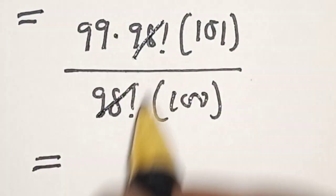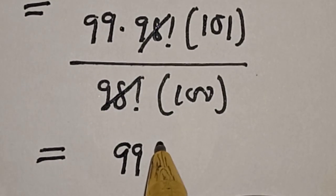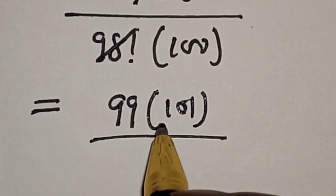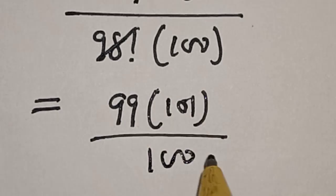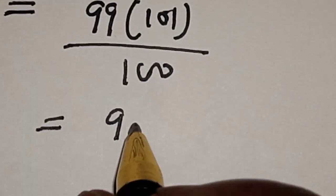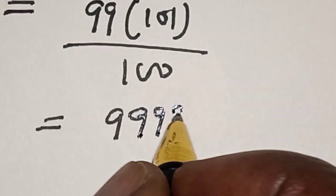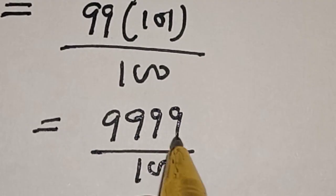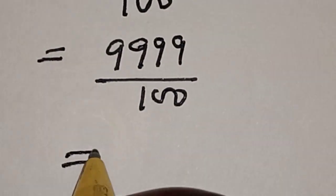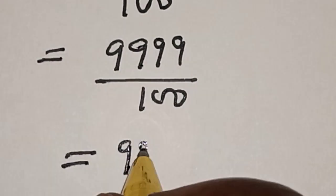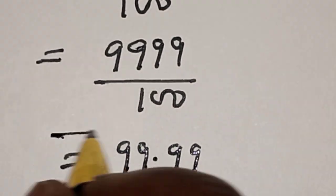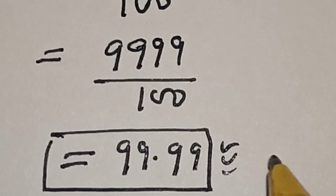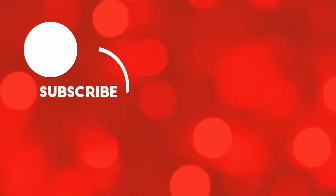The 98 factorial terms cancel, leaving us with 99 factorial divided by 98 factorial, multiplied by 101 over 100. This gives us 99 multiplied by 101 divided by 100, which equals 9999 divided by 100. Therefore our final answer is 99.99. If you enjoyed the class, please don't forget to like, share, comment, and subscribe. Thank you.